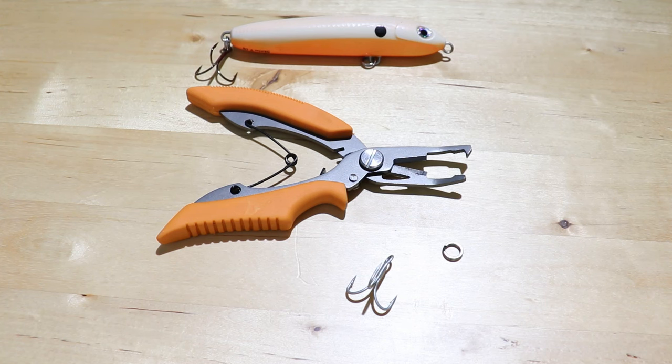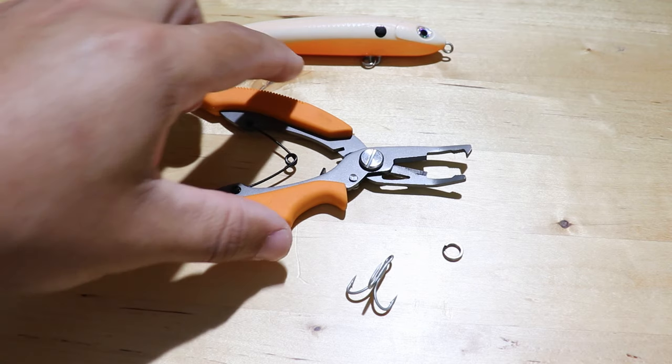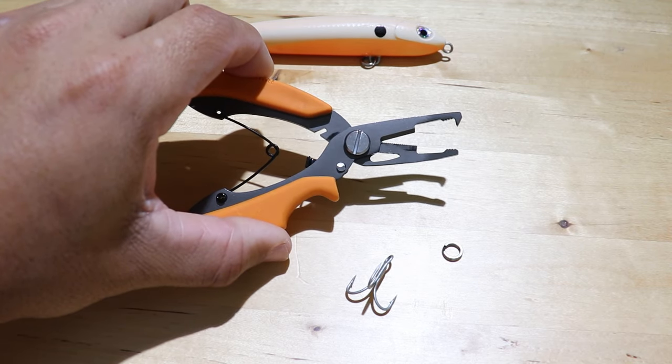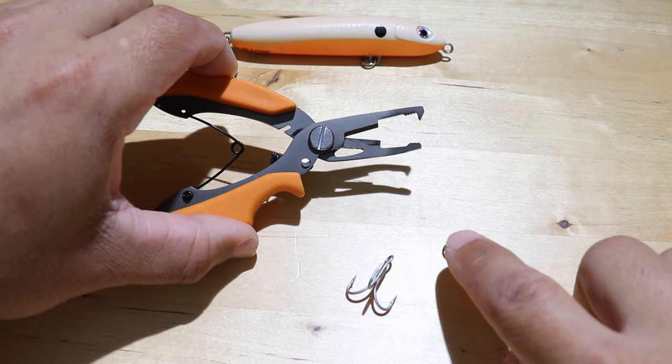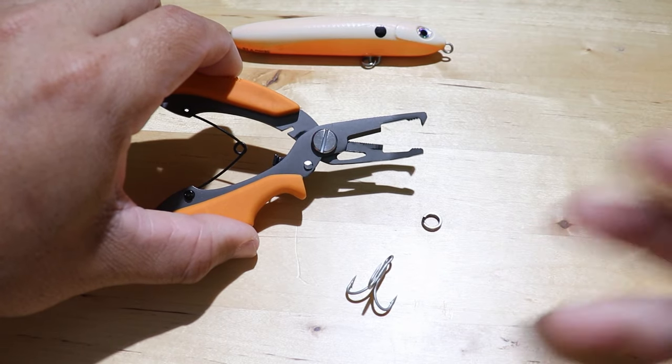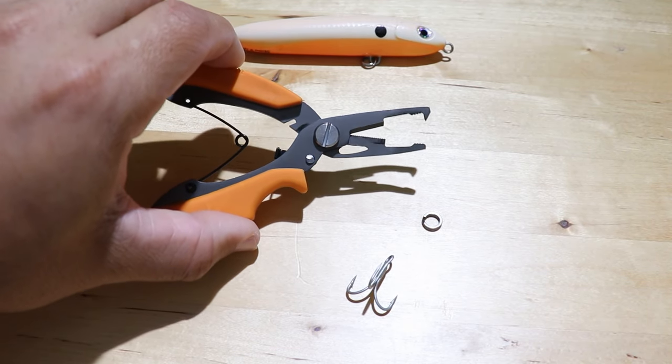Hey, this is Tony here with SaltStrong and I just wanted to do a quick video showing you how to effectively use split ring pliers when swapping out your treble hooks or split rings themselves, or you may be putting inline hooks on all your baits.